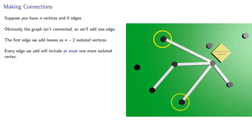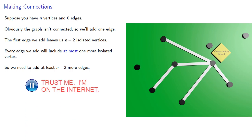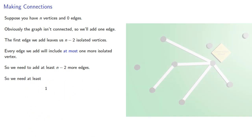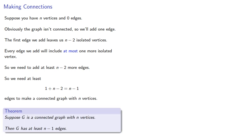So we need to add at least n-2 more edges. We need our first edge, plus n-2 more — that's n-1 edges — to make a connected graph with n vertices. And this proves our theorem: suppose g is a connected graph with n vertices, then g has at least n-1 edges.